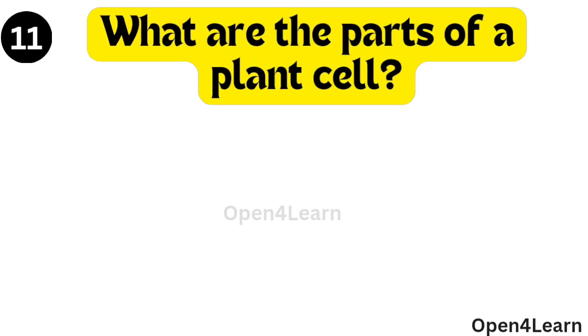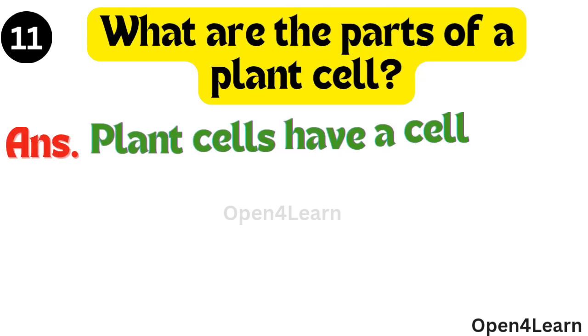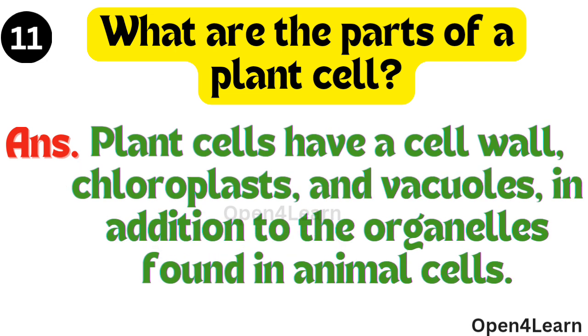Question, what are the parts of a plant cell? Answer, plant cells have a cell wall, chloroplasts and vacuoles in addition to the organelles found in animal cells.